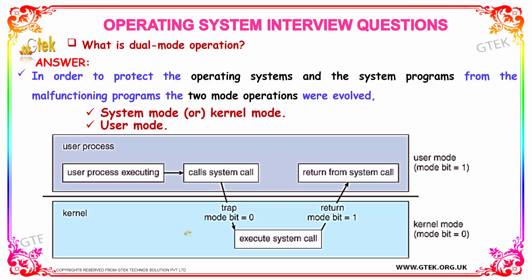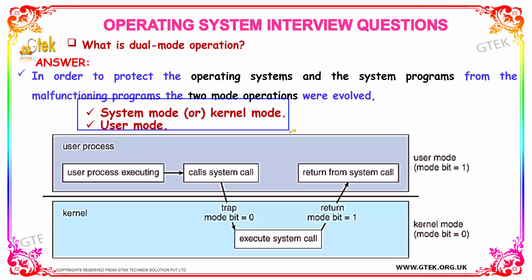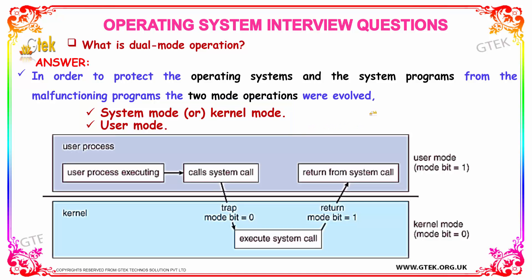What is meant by dual mode operation? In order to protect the operating system and system programs from malfunctioning programs, we have two modes of operation: the system mode or kernel mode, which is a secure mode, and a user mode of operation. This is known as dual mode operation.